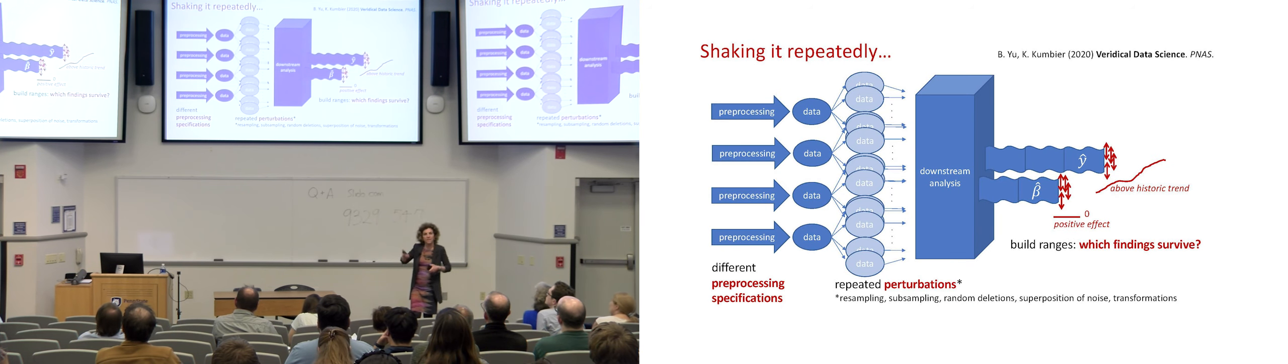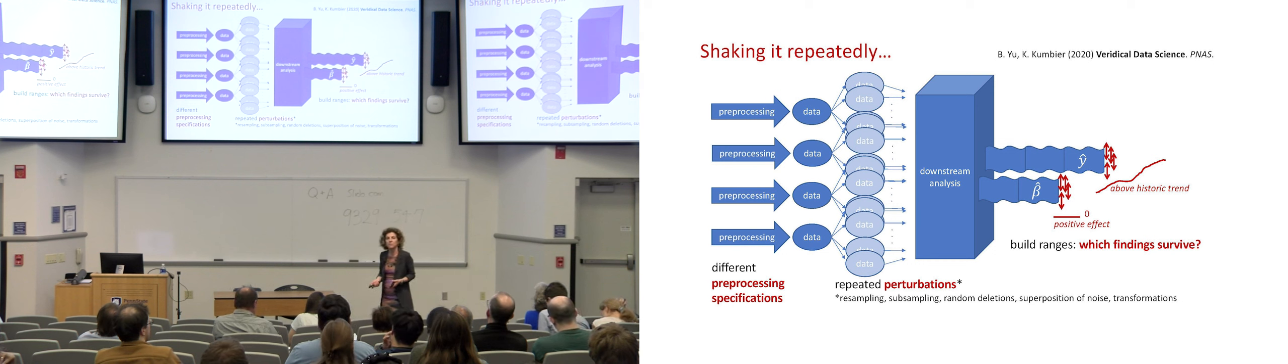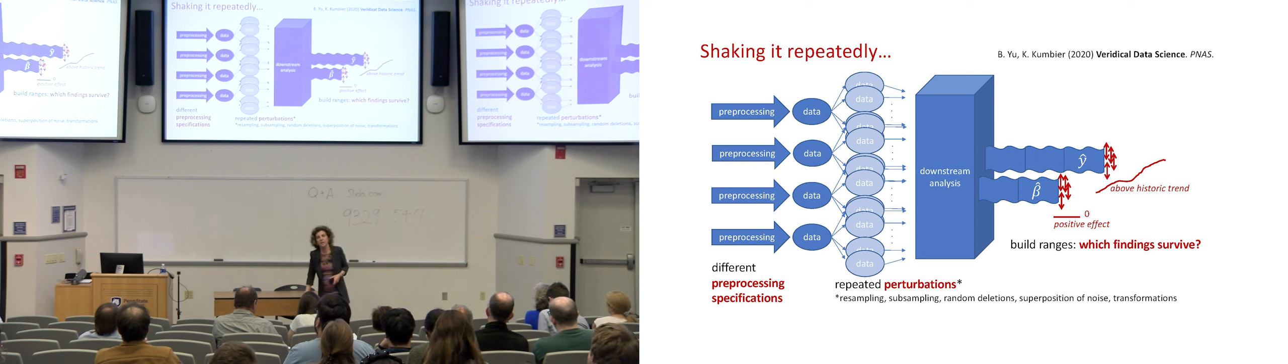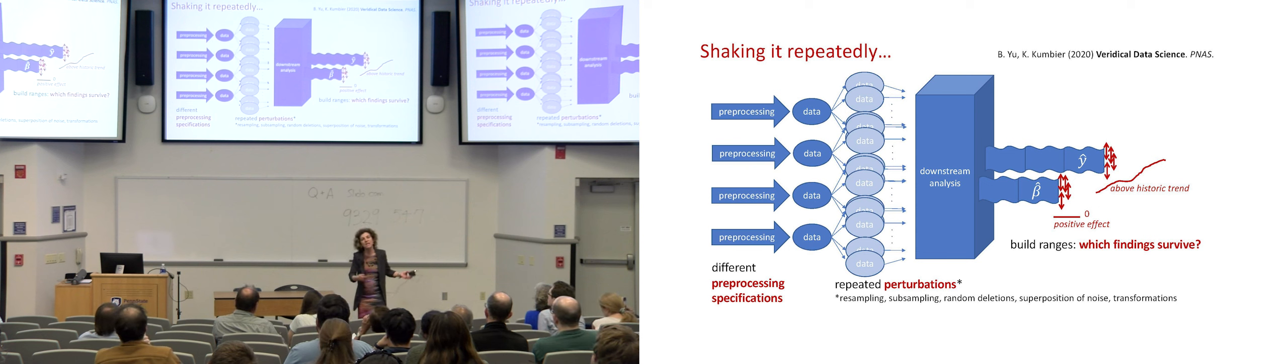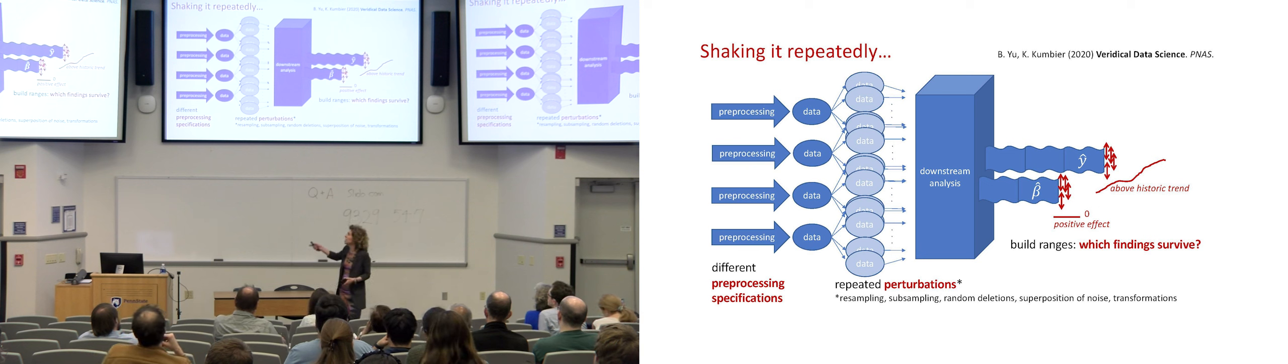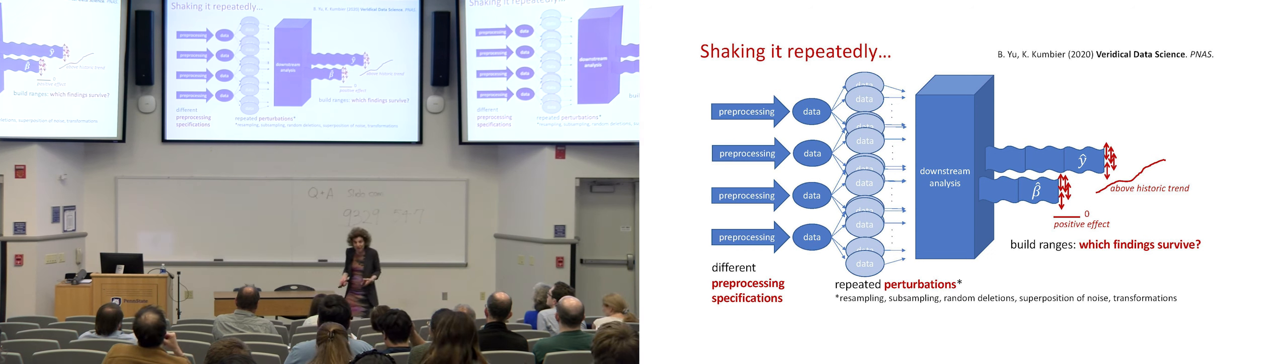This should give you a bit more of an idea of what I'm talking about and I'm also giving you a reference here to an article in PNAS by Binou and co-authors, a couple of years ago, called Veridical Data Science. She's trying to make this point about stability very strongly. So, shaking it repeatedly. You can try many, many different pre-processing specifications. And you should do many, many repeated perturbations of the data that can be done in many different ways. And then you re-run the analysis. So, instead of one set of results, you actually have many. You can see how they change. Possibly you can build ranges and see what sticks, what survives. Is that effect always positive, really? Is that prediction above historic trends? Does it stay above historic trends if you shake?